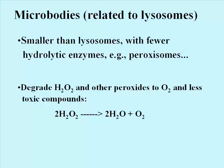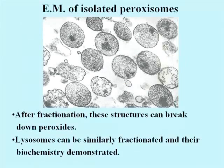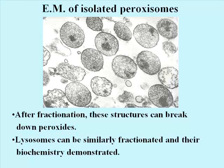Here we see the chemical reaction in which two molecules of H2O2 are broken down into two molecules of water and a molecule of oxygen gas. An isolate of vesicles from cells expected to contain peroxisomes can be identified by showing that they break down added peroxides. An isolate of putative lysosomes can be characterized by assaying them for any one of a variety of hydrolytic enzymes.